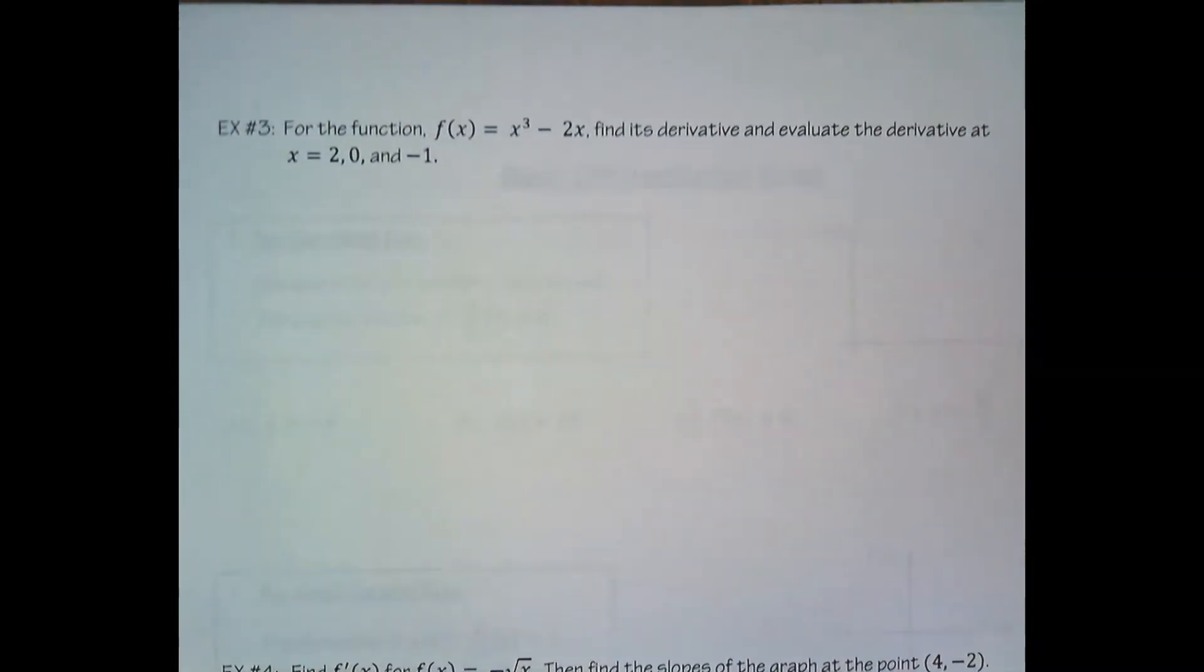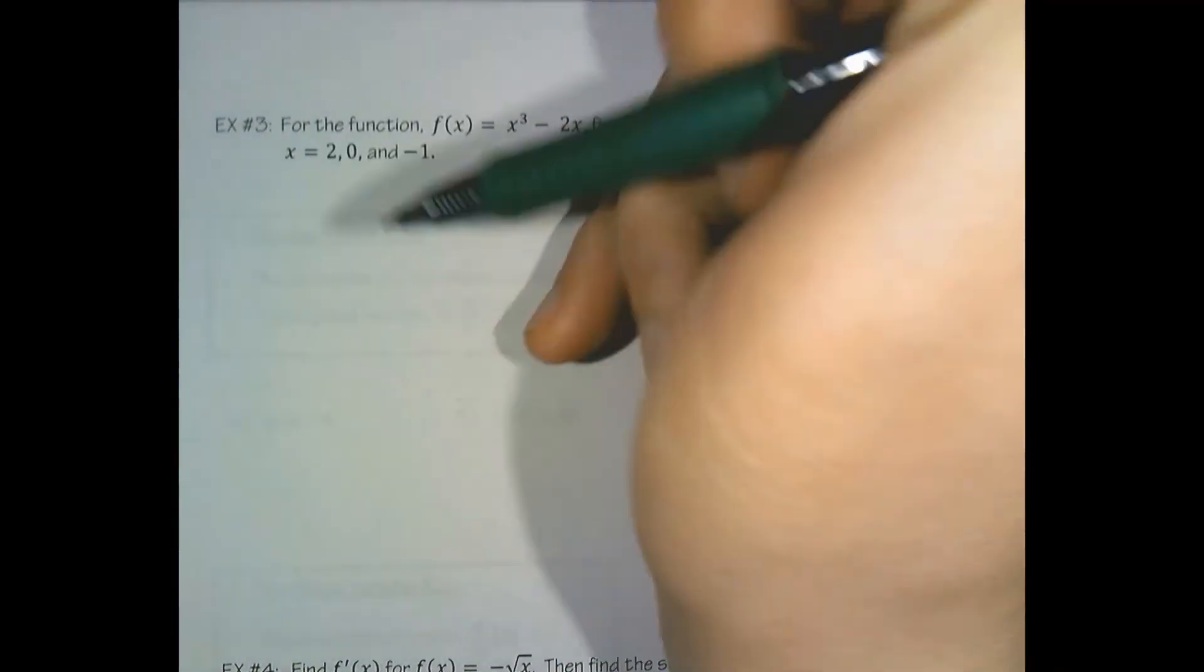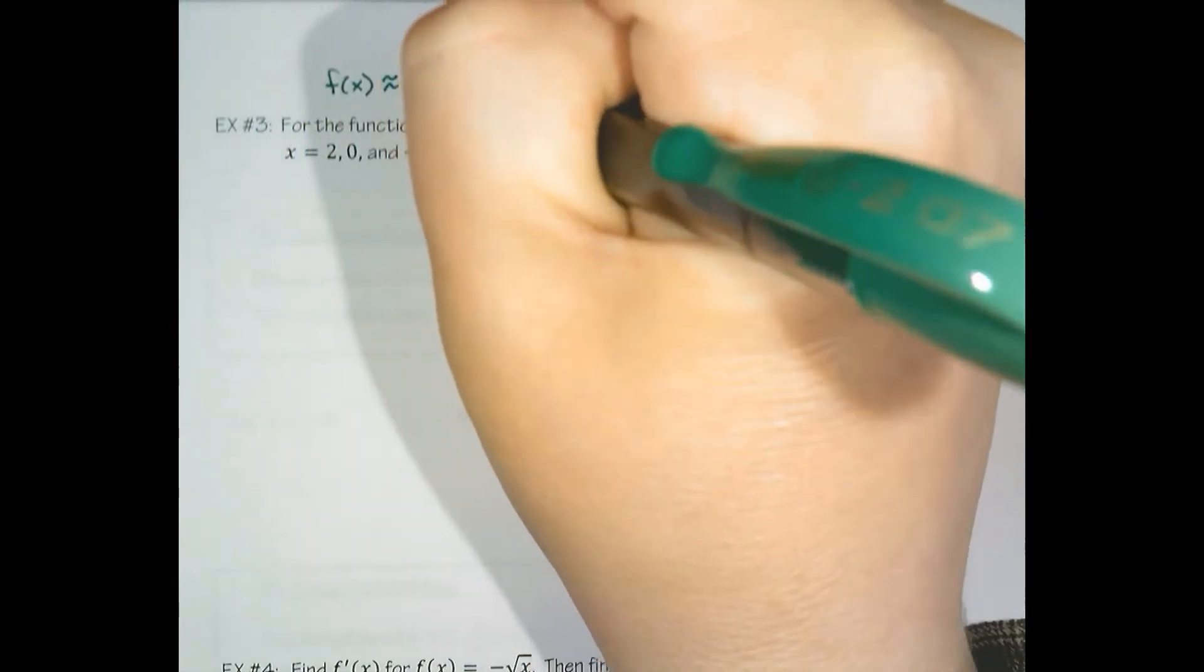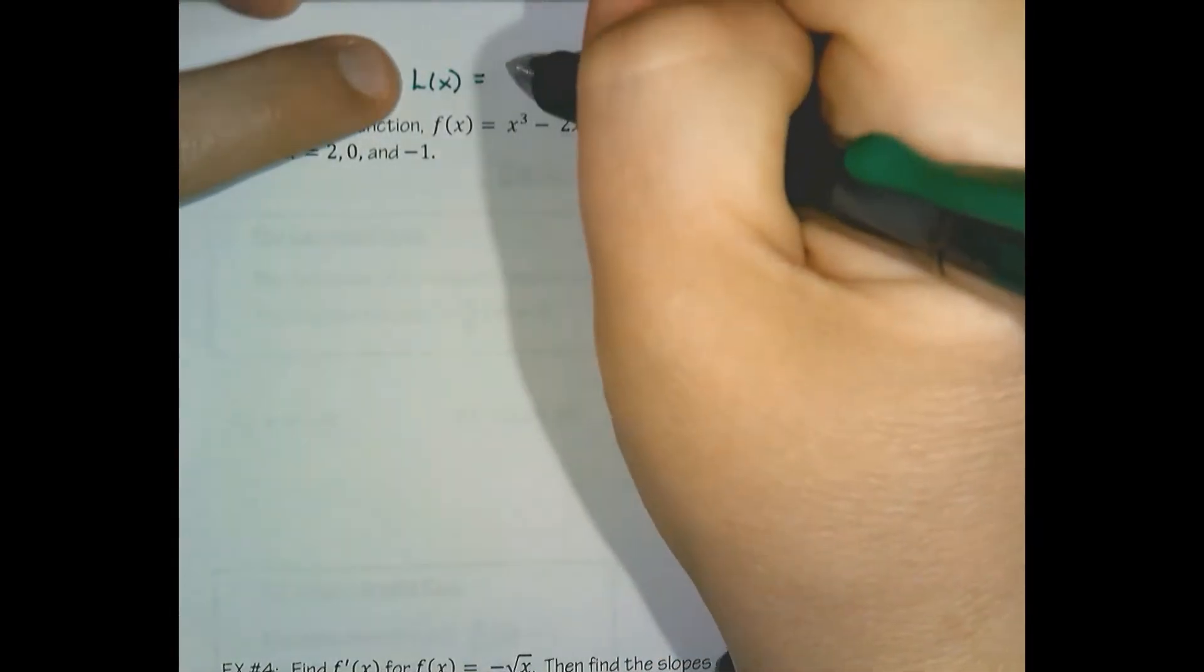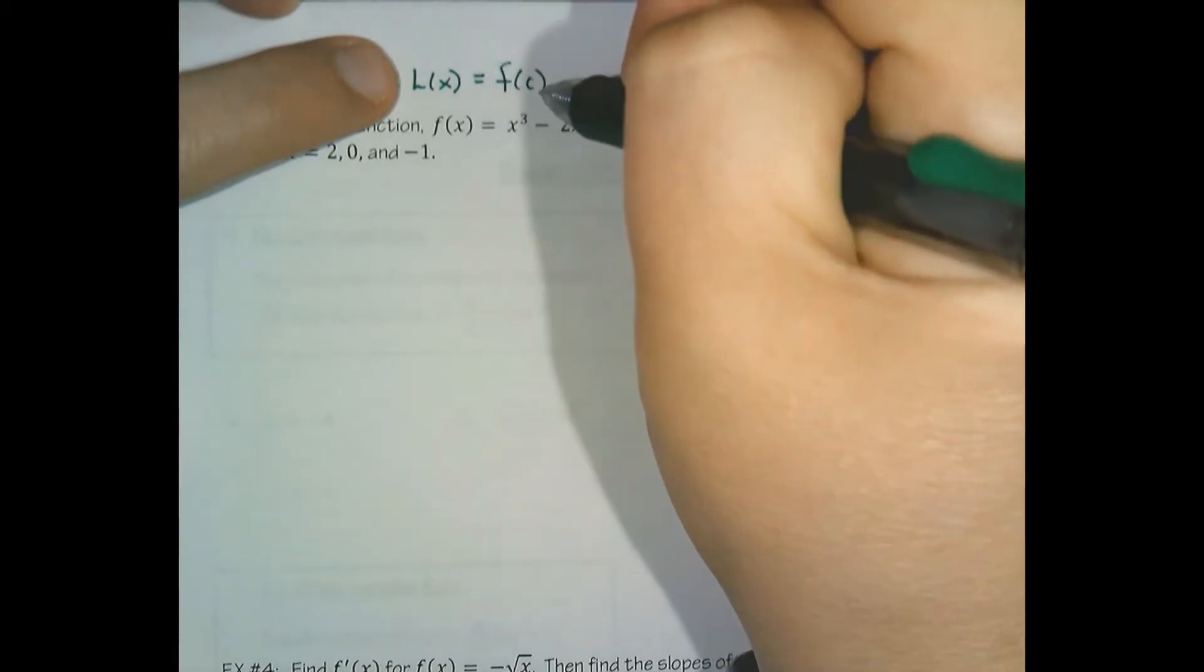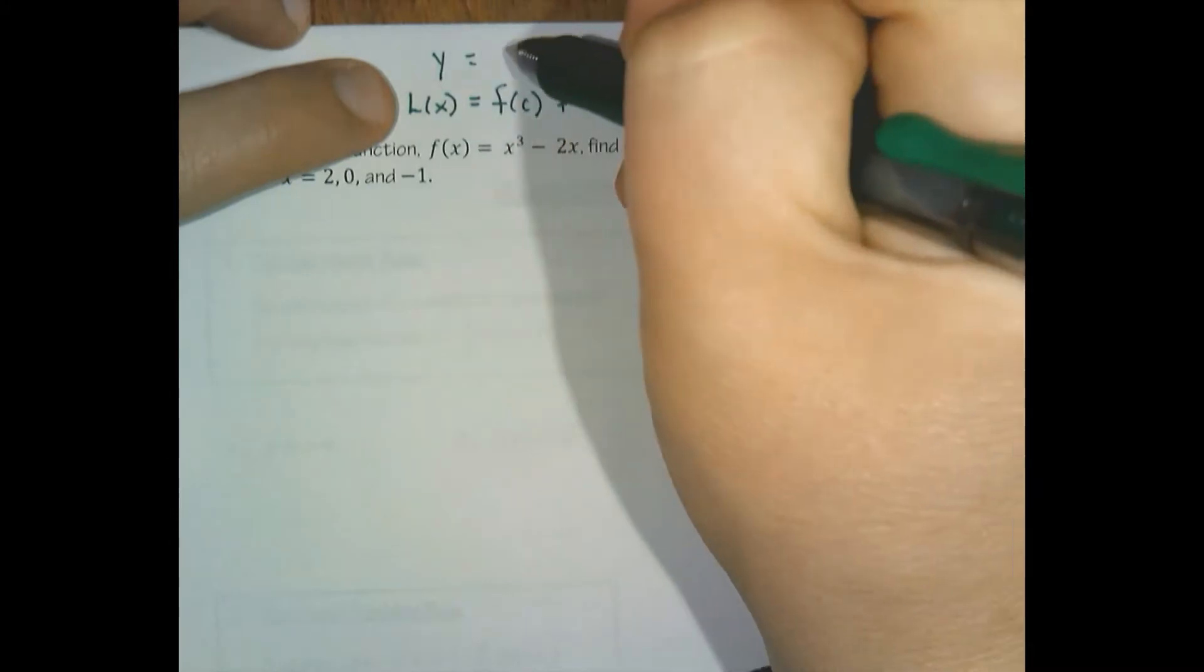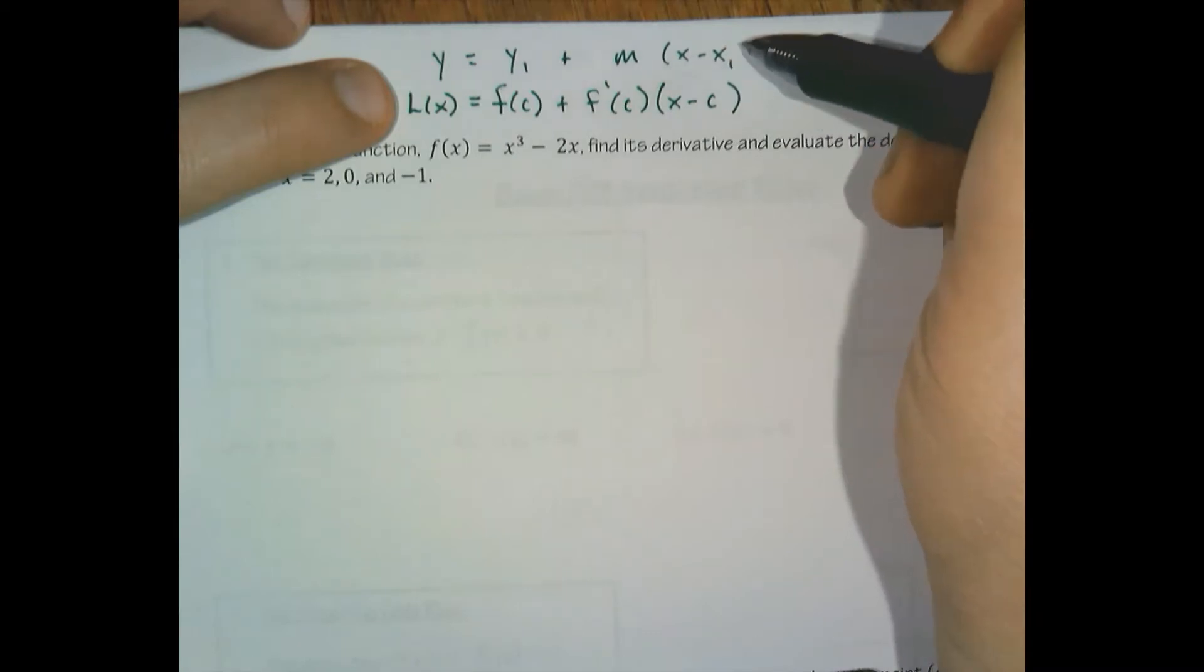In this video, we're going to continue to explore the derivative and the tangent line. I think it's helpful to always have at our reference the go-to formula for laying out tangent line equations. This is just a modified version of the point-slope form or the Taylor form.